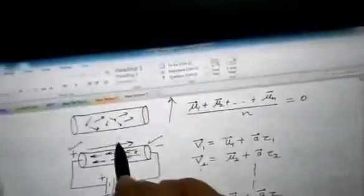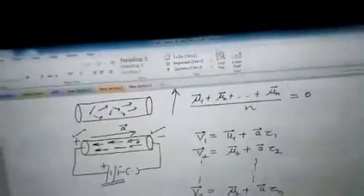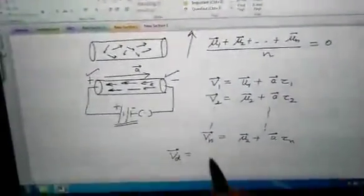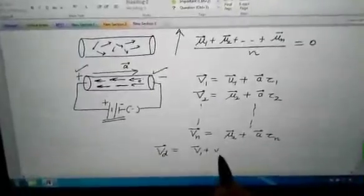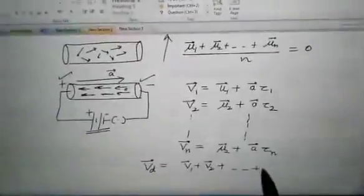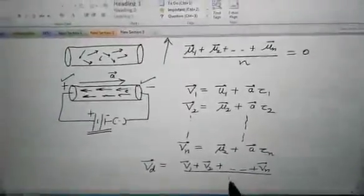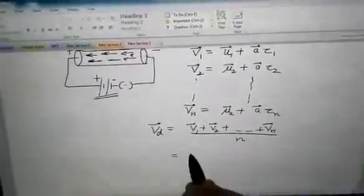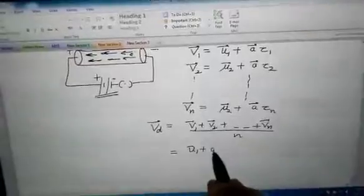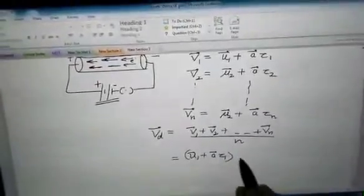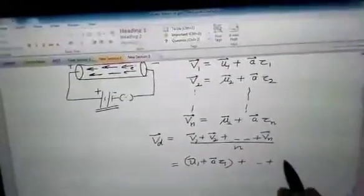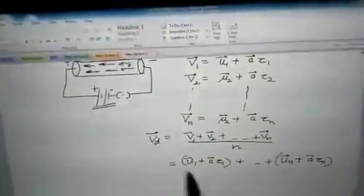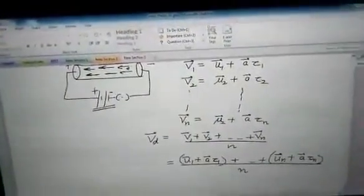Now the drift velocity is the average of all the velocities with which the electrons get drifted towards the positive end of the conductor. So vd is v1 plus vn upon n, which is u1 plus a vector into tau 1 plus un plus a vector into tau n divided by n.